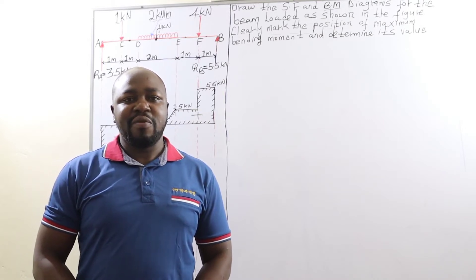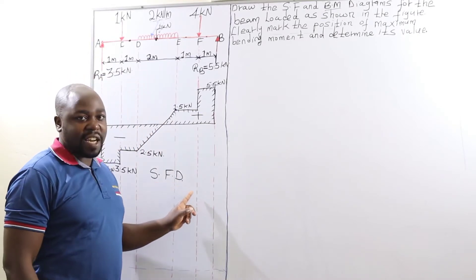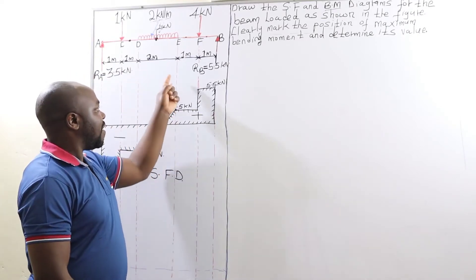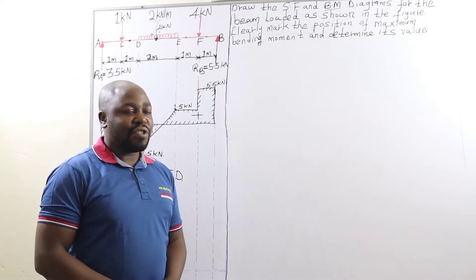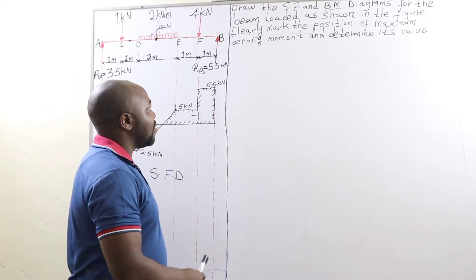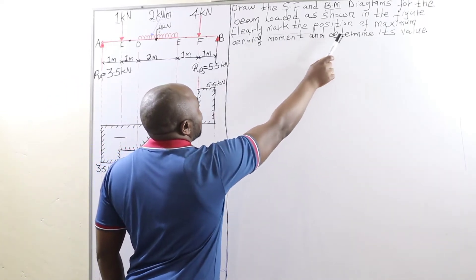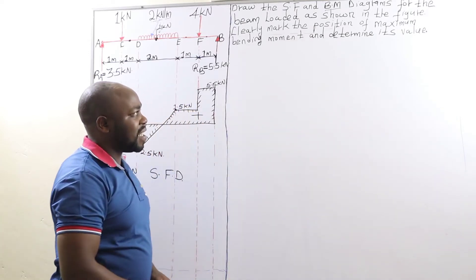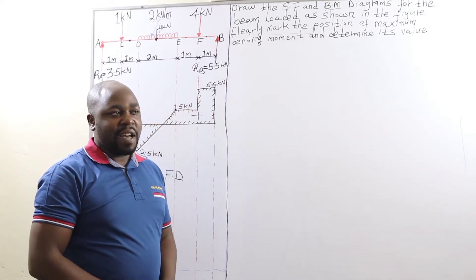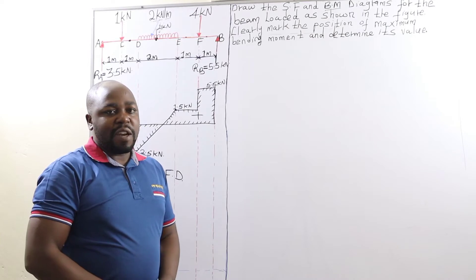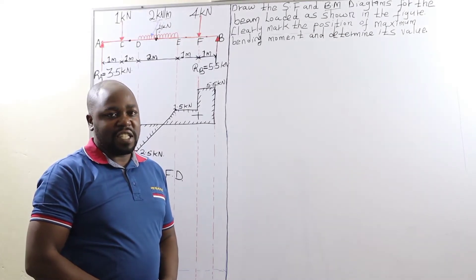Ladies and gentlemen, we had already plotted the shear force diagram for our simply supported beam. The next thing we are going to do is to clearly mark the position of the maximum bending moment and determine its value. Remember, when bending moment is maximum, shear force is zero.